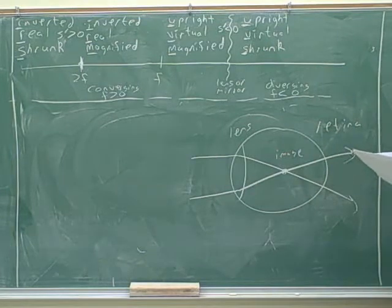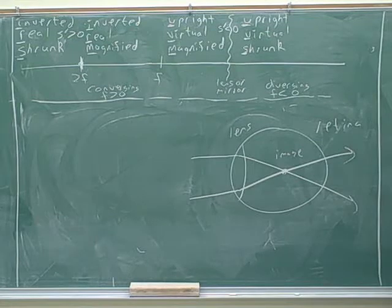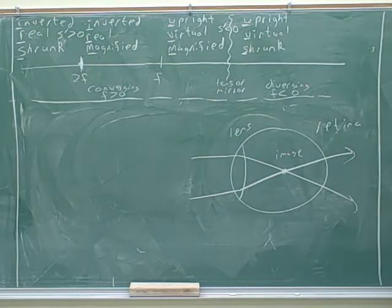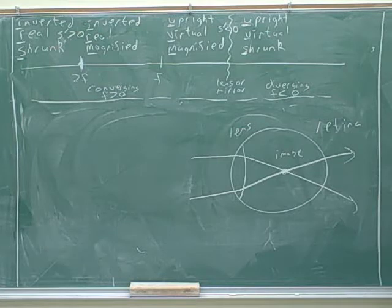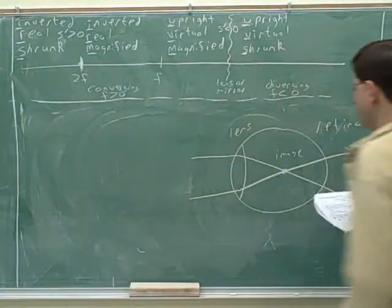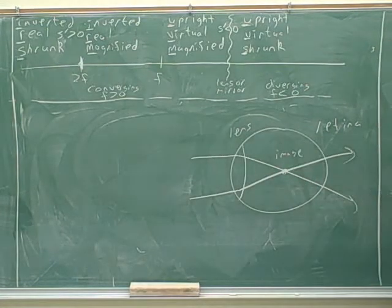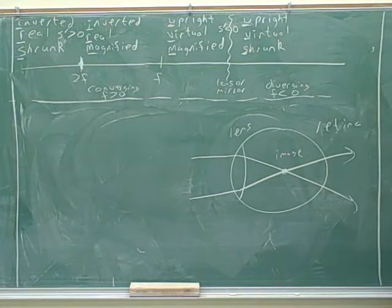It looks like you remember that from before. There's one more question about the eye that was tricky — it gives you the focal point of your eye and what it should be, and asks what the power of the prescription needs to be. We said in class that power is 1 over F. Just for the record, remember that myopic means nearsighted, and hyperopic would be farsighted.